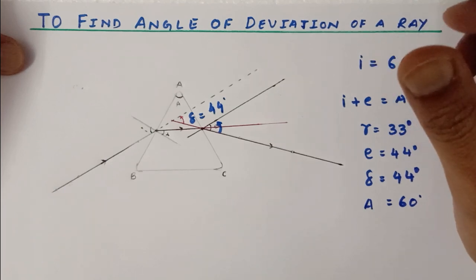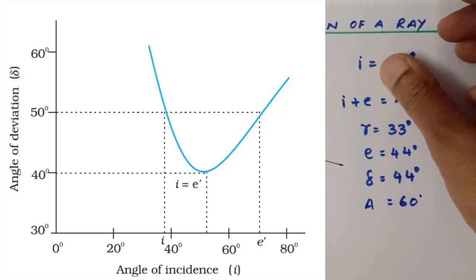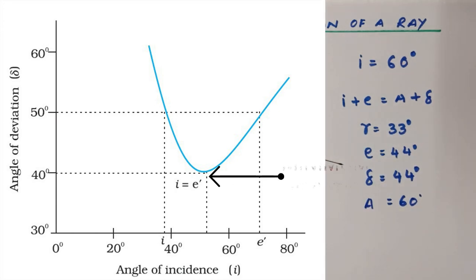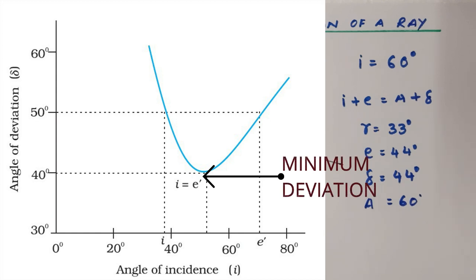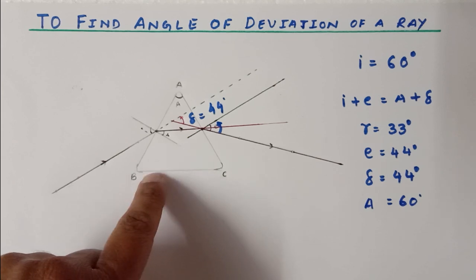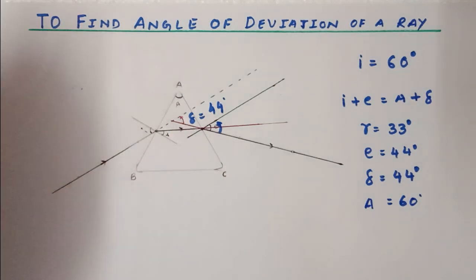You can find the value of delta by this pin method and then you are supposed to plot a graph. The graph is plotted with delta against the angle of incidence and you will get a curve-type graph. When you take multiple readings, you will see the graph will have a minimum value of deviation — that is called angle of minimum deviation. Under that situation only, the refracted ray and the base of the prism are parallel.